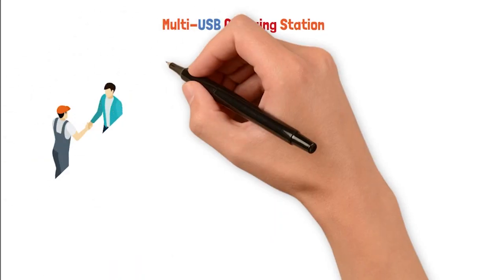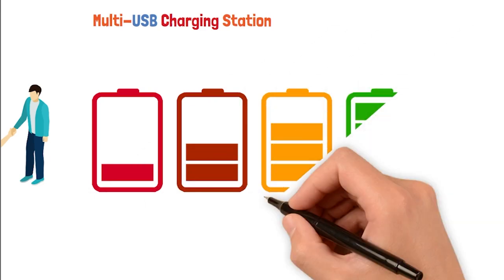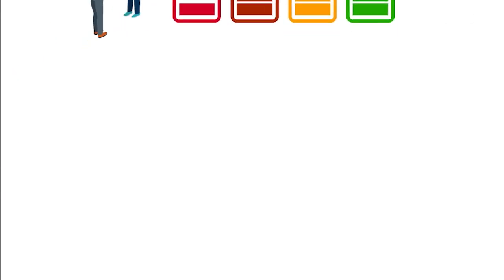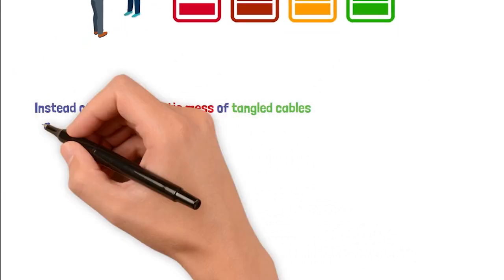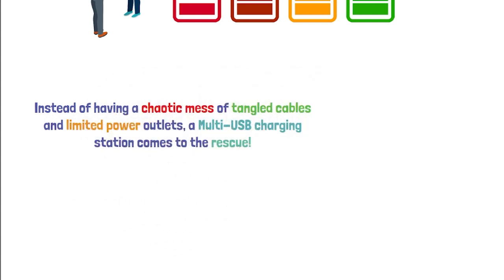Imagine that you're hosting a group of guests in your awesome Airbnb and everyone needs to charge their devices. Phones, tablets, smart watches, you name it. Instead of having a chaotic mess of tangled cables and limited power outlets, a multi-USB charging station comes to the rescue.